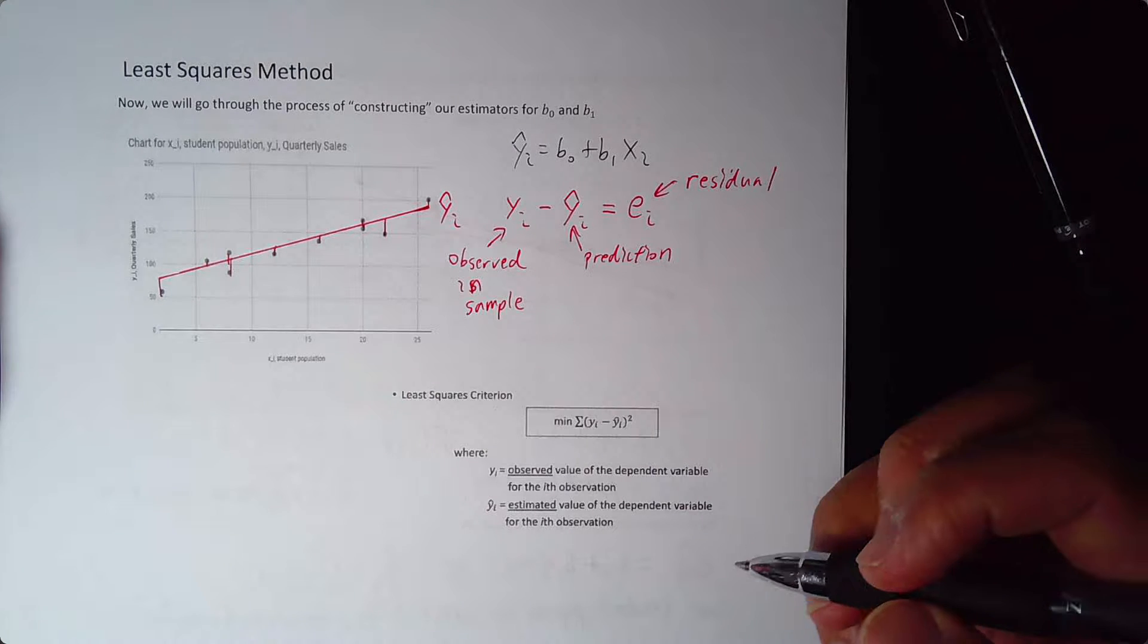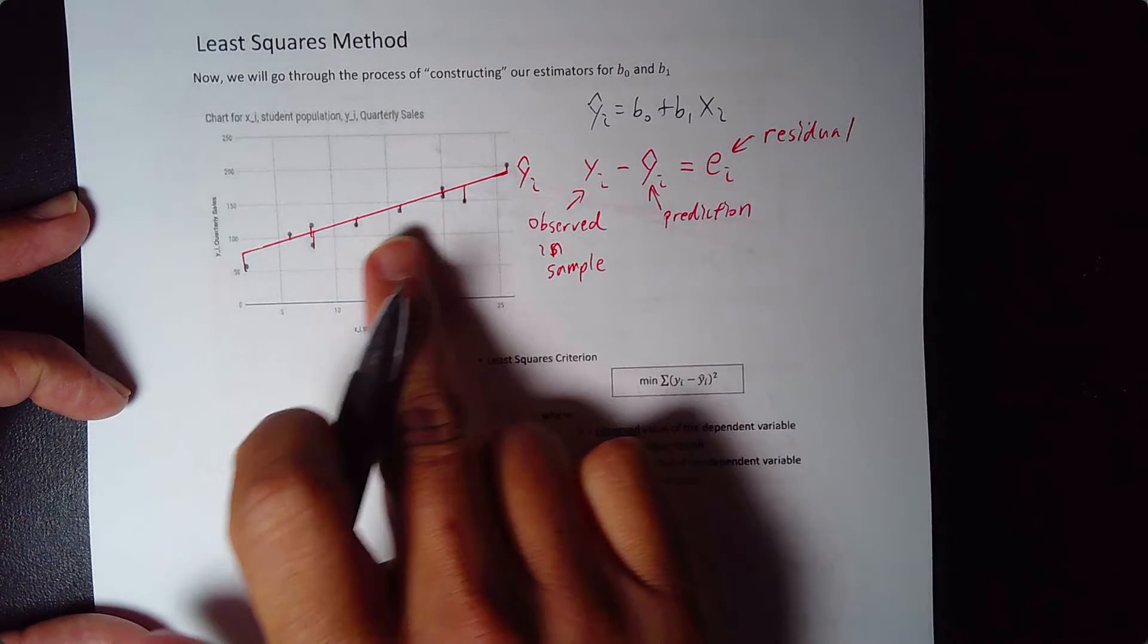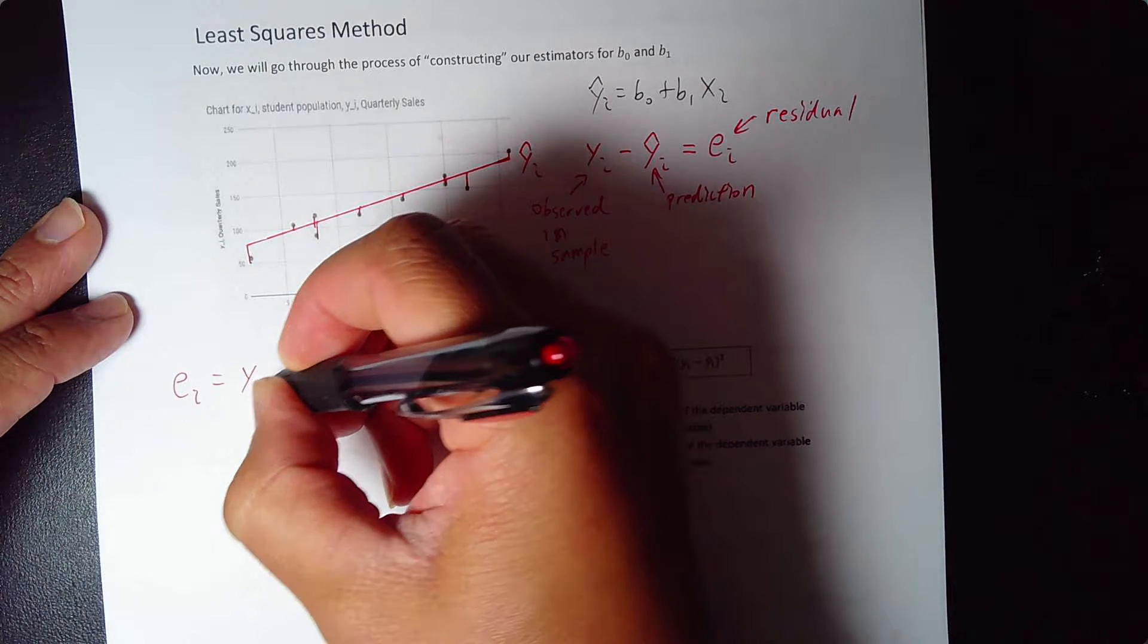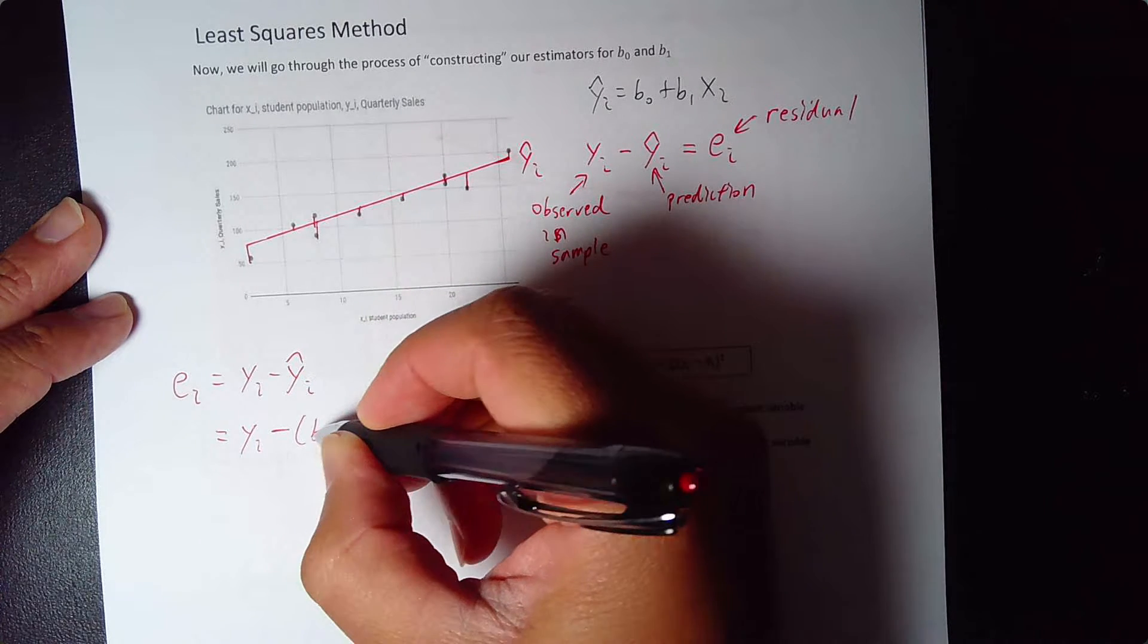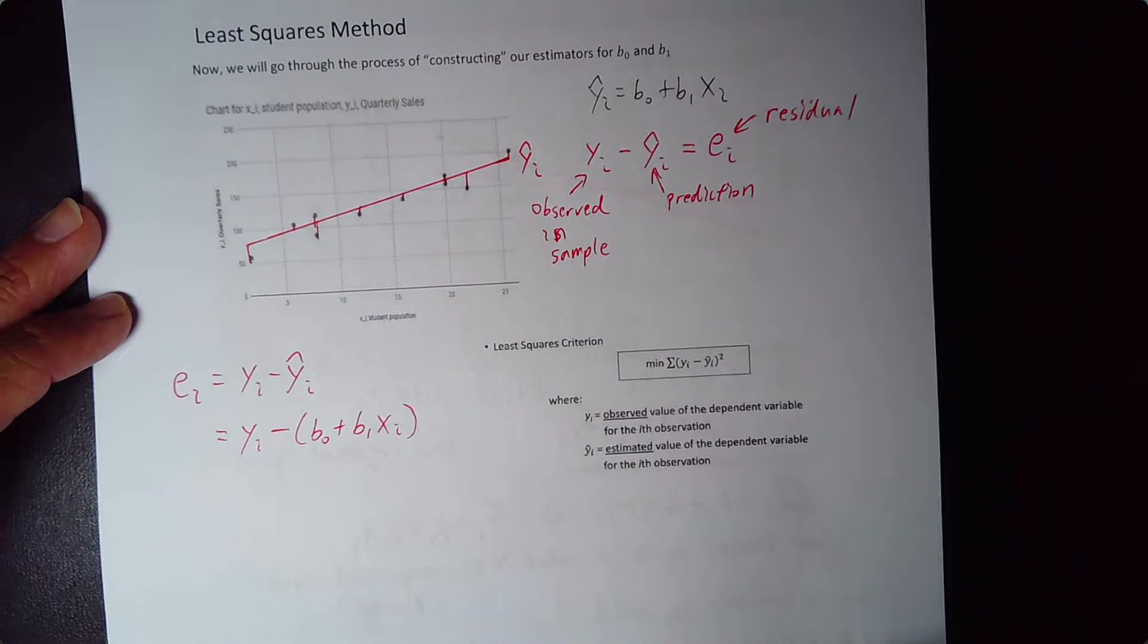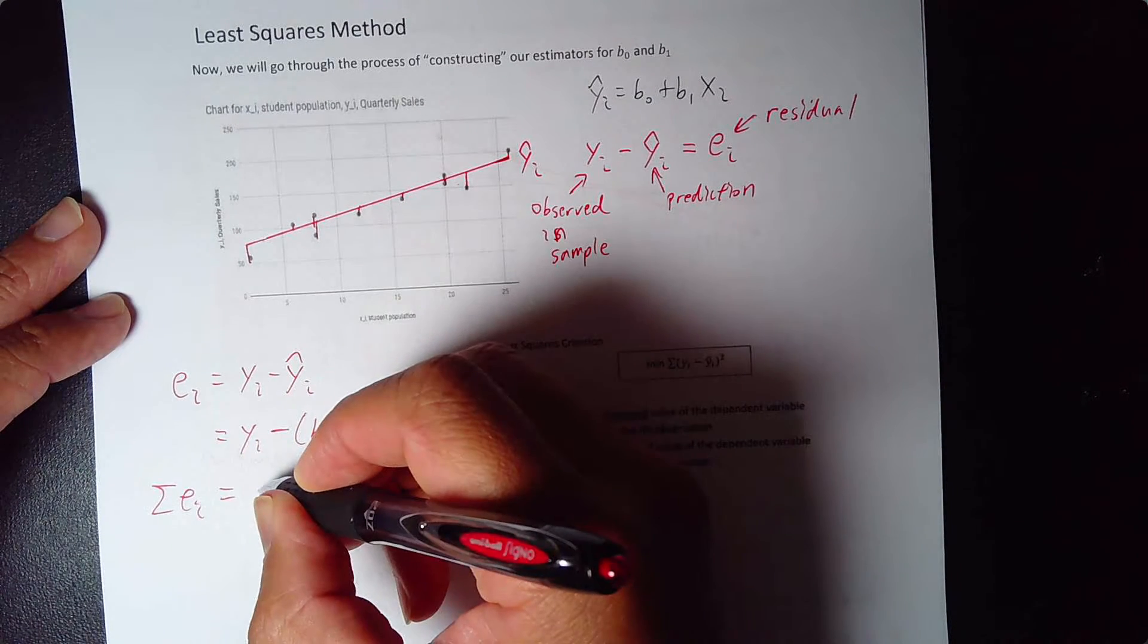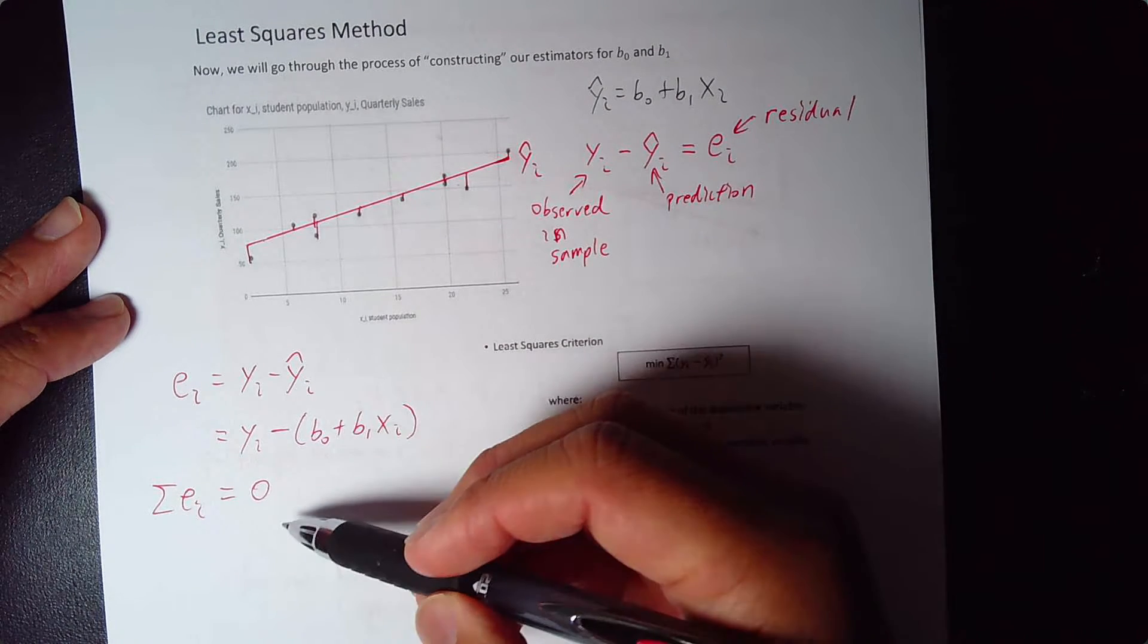And so how about that as my criteria? So I'm going to make a line such that the residuals from every single observation is minimized. So again, here, we have our ei equals yi minus y hat i. But remember, y hat i is simply b0 plus b1 xi. Now, if I simply just add up all the deviations, all the ei's here, sum of ei is going to equal 0, because the points on the bottom will be negative, the points above it will be positive, and they will all actually cancel out.